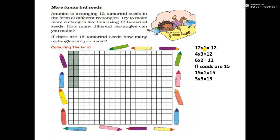12 ones are 12. You can make a 1×12 rectangle, a 2×6 rectangle (since 6×2=12), a 3×4 rectangle, and a 4×3 rectangle. So there are 3 ways to make different rectangles with 12 seeds.